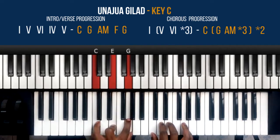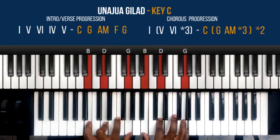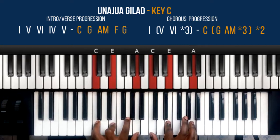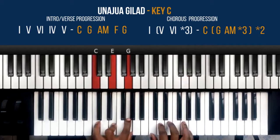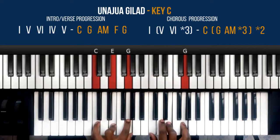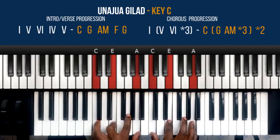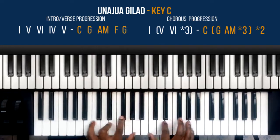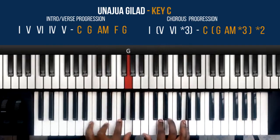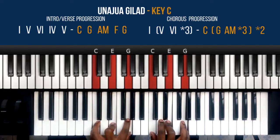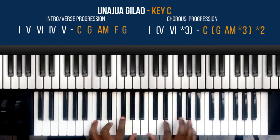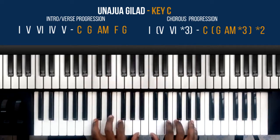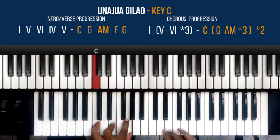The chorus is C, G, A minor, G, A minor, G, C. So it's C, G, then A minor, G — A minor, G times three — and then back to C. Then it goes back to the chorus of C, G, A minor, F, C, G. There's also that part where there's that reggae vibe.